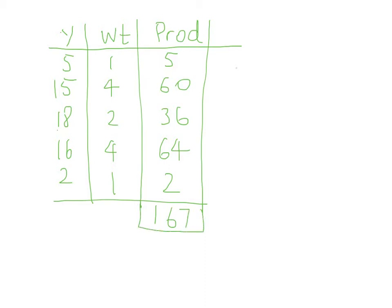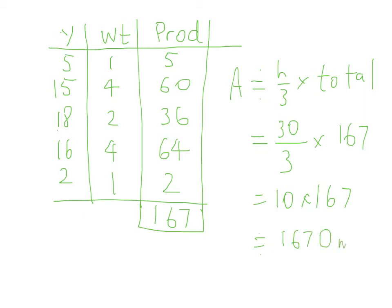Then our area is approximately equal to h over 3 times the total, which is 30 over 3 multiplied by 167, which is 10 times 167, which is approximately 1670 metres squared.